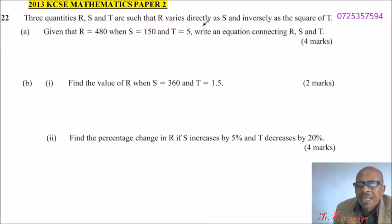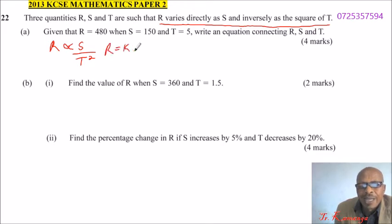From the statement here, this question is from form 3, variation. We can get the equation using the first statement. R is directly proportional to S and inversely proportional to T squared. We can write this as an equation: R equals K times S divided by T squared.